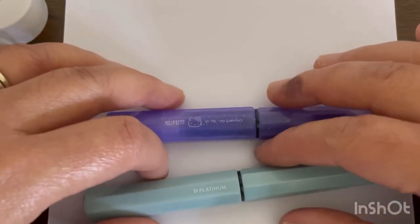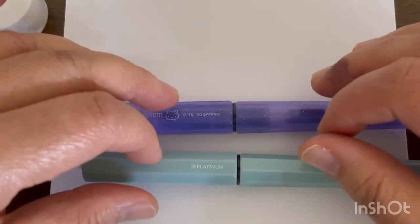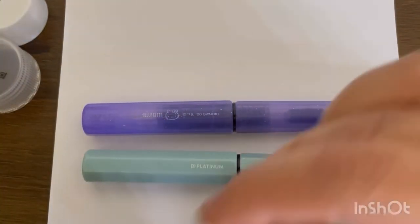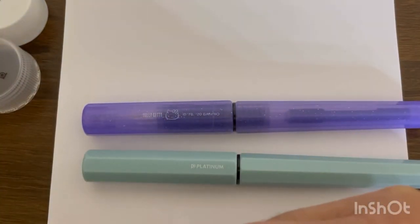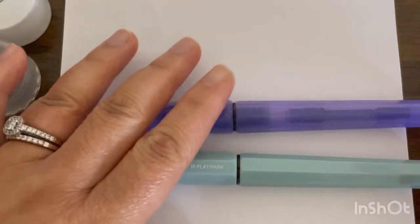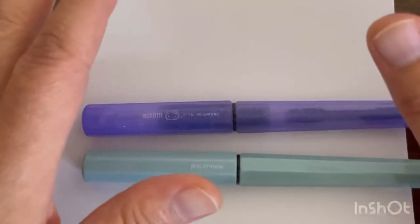Sometimes the smoothness of the writing also has something to do with the kind of ink you have in your pen, because some inks are more lubricated than others. Some inks are drier or some inks are wetter than others.